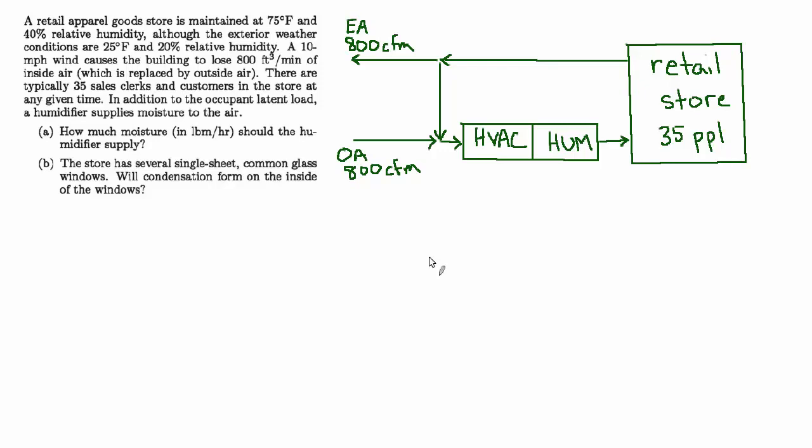So I've drawn on the right a simple air handling scheme. We have the retail store with about 35 people in it at any given time, and then we have this exfiltration that's causing the building to lose 800 CFM of inside air on a continuous basis. I've drawn that as exhaust air.